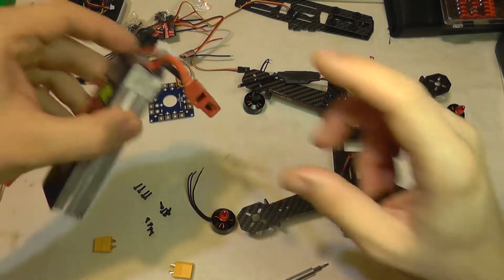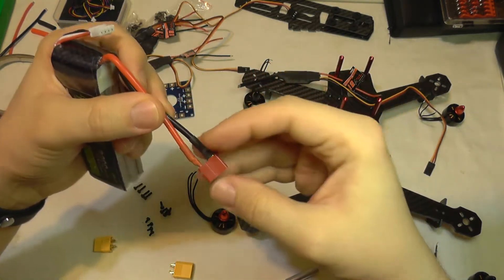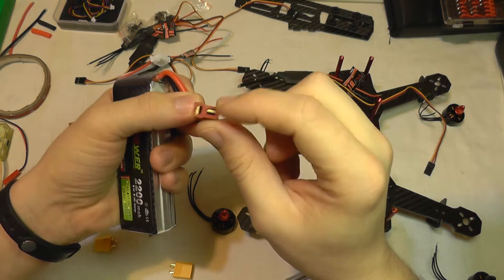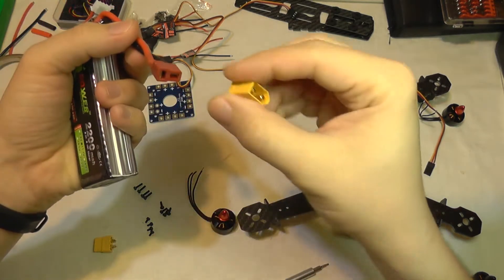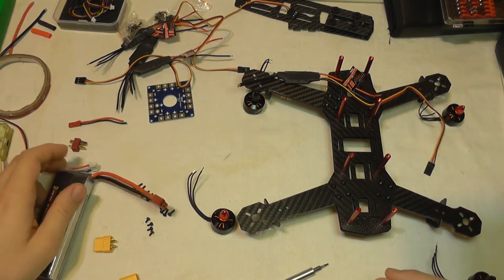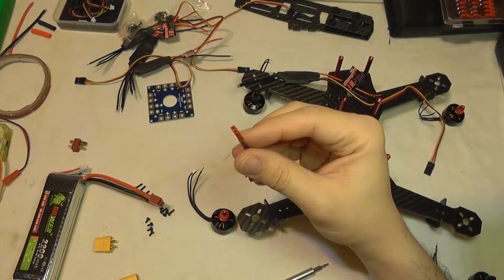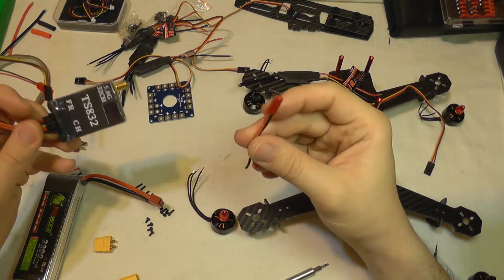Also I'm going to change the plug on the delivered battery because I do not like this type of connector. I will replace it with this type of connector and also I'm going to add another connector for the FPV transmitter.